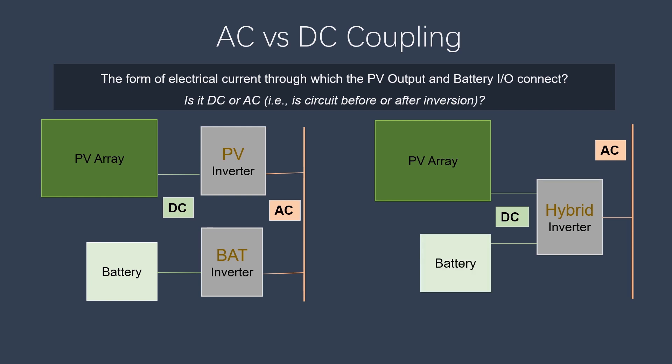On the right side, we have the same PV array but connected to a hybrid inverter, which has a DC bus bar. Therefore, there is no conversion to AC between the PV array and the battery. The left side is an example of AC coupling; the right side is an example of DC coupling.